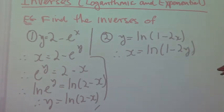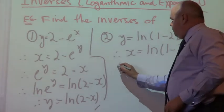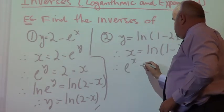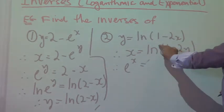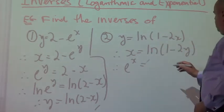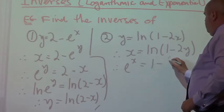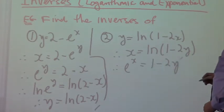Now, what I'm going to do is exponentiate both sides. In other words, e to the power of x is equal to, when I'm exponentiating this side, all it means is the ln goes out. And I'm left with 1 minus 2y.